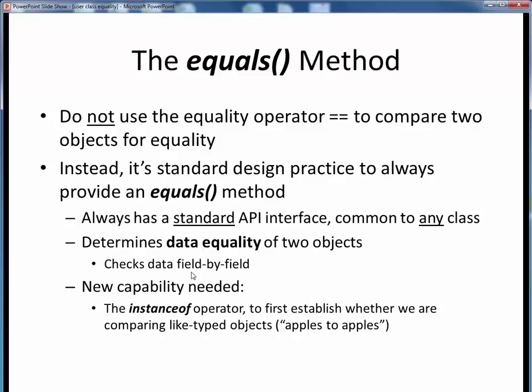However, if even so much as one instance variable between the two objects differs, equals will return a false result. Harsh, perhaps, but thorough.